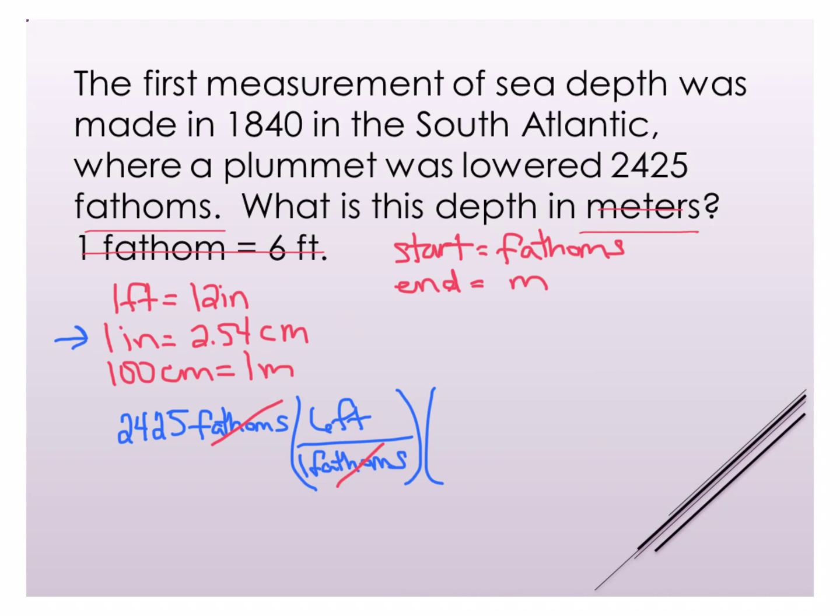Now I say well I've got something in feet so I could say one foot is 12 inches because this is the only relationship other than fathoms to feet I have that involves feet so one foot is 12 inches. Again I can cancel out the units here, feet and feet I'm left with inches and now I have one inch is 2.54 centimeters so now inches cancels with inches and then I have 100 centimeters is one meter and now centimeters cancels with centimeters.